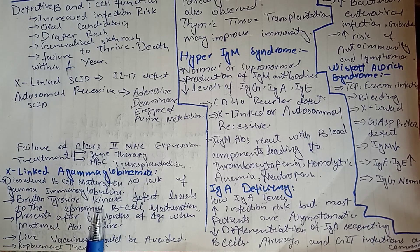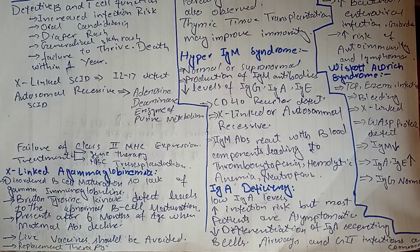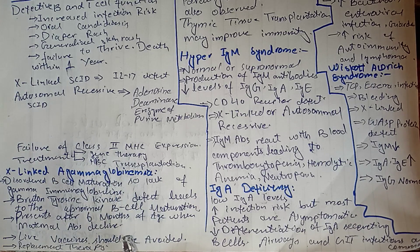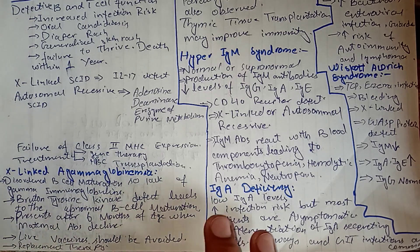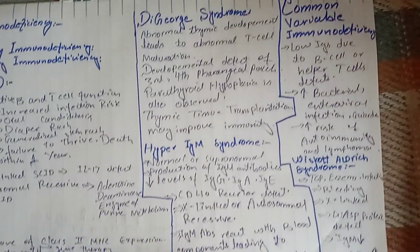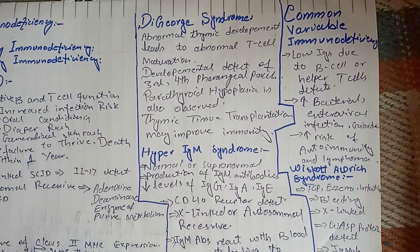This disease manifests after about six months of age because up to six months, maternal antibodies are active in the baby. Treatment is replacement therapy with immunoglobulins.